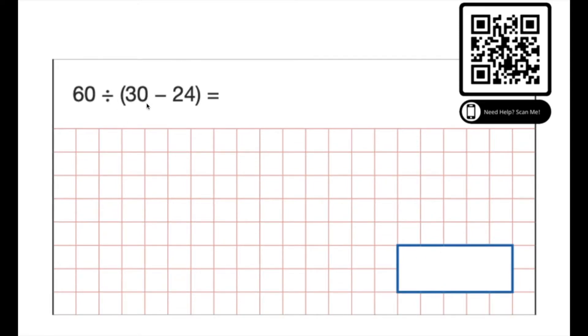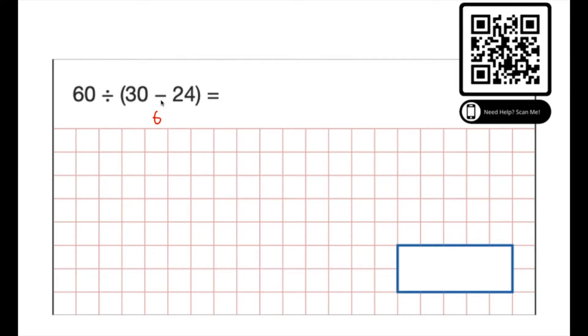Okay looking at this one we have brackets in this case, so we always need to do that first. 30 subtract 24, that's what's in the brackets, so that will be 6. 30 take away 24 is 6. Now we do the division, so 60 divided by 6 equals, we should know, 60 divided by 6 is 10, so our answer is 10.